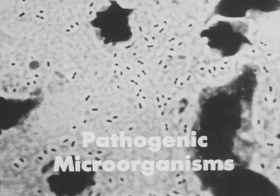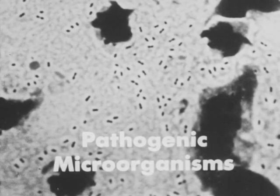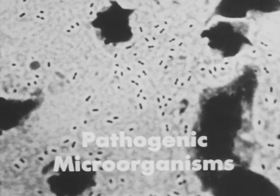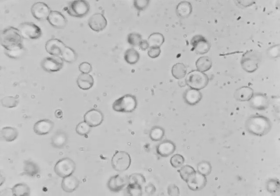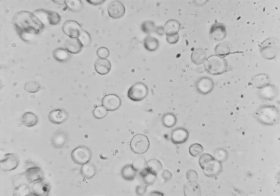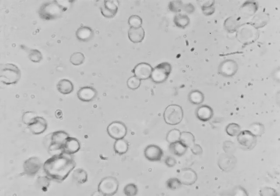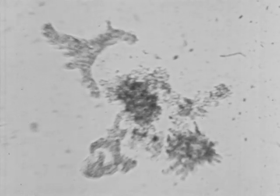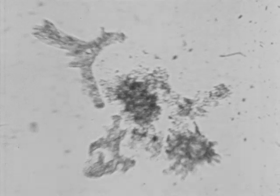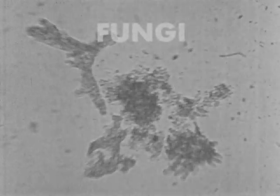Microorganisms that are capable of causing diseases are called pathogenic microorganisms. These microorganisms cause pneumonia. All microorganisms are either simple living plants, such as these fungi, or simple living animals, such as these protozoa. Pathogenic microorganisms are found among each of the five kinds of microorganisms.